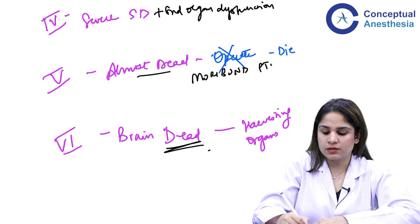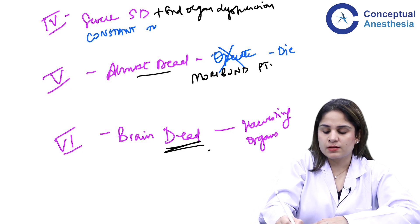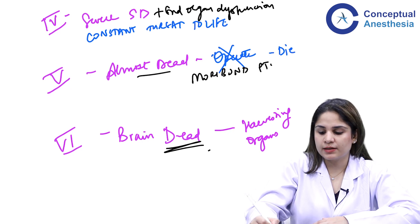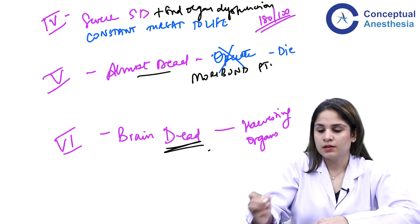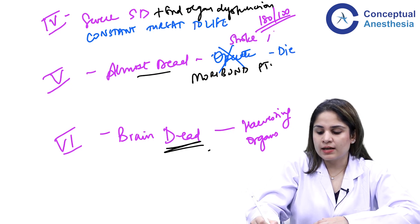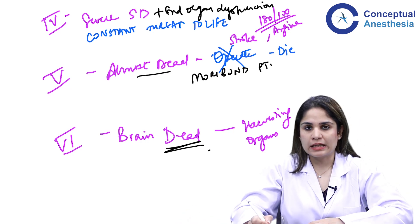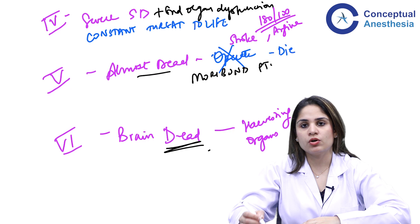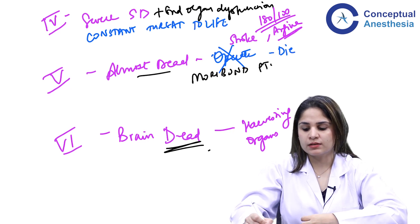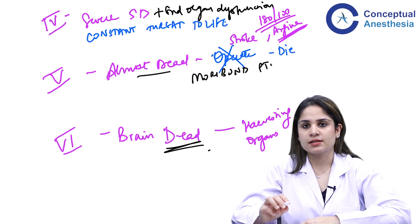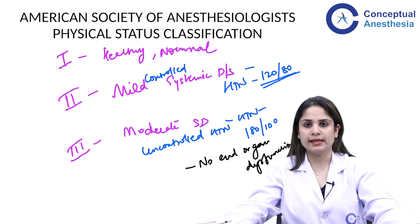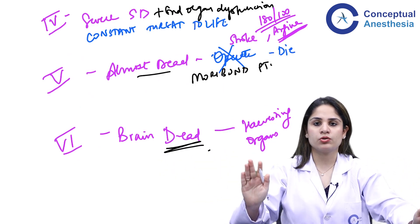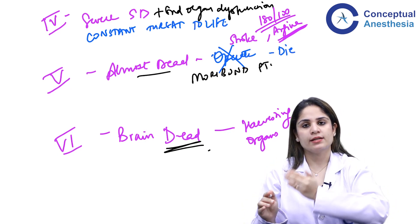ASA 4 is severe systemic disease with end-organ dysfunction that poses a constant threat to life. For example, a hypertensive patient with uncontrolled blood pressure of 180/100 who also had a stroke one year ago and now experiences angina — this suggests end-organ dysfunction and risk of myocardial infarction, making it a constant threat to life. To summarize: ASA 1 is completely healthy, ASA 6 is brain dead, ASA 5 is almost dead, and ASA 2-3-4 are mild, moderate, and severe systemic disease.